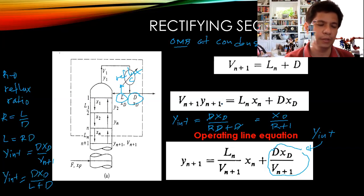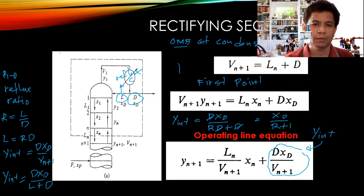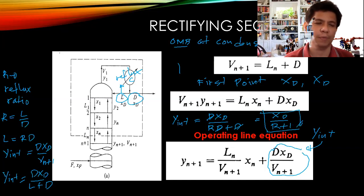In summary, to plot the rectifying section operating line you need two points. The first point is (x_d, x_d). The second point is the y-intercept, which equals x_d / (R + 1). Generally R and x_d are given in the problem, so you can directly plot the rectifying section operating line.